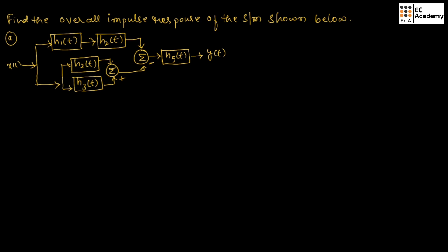Now let us consider the next problem where we need to find the overall impulse response of the system shown below. In the given system, these two impulse responses are in cascade form. So, we can write the impulse response as H1 of t convoluted with H2 of t.